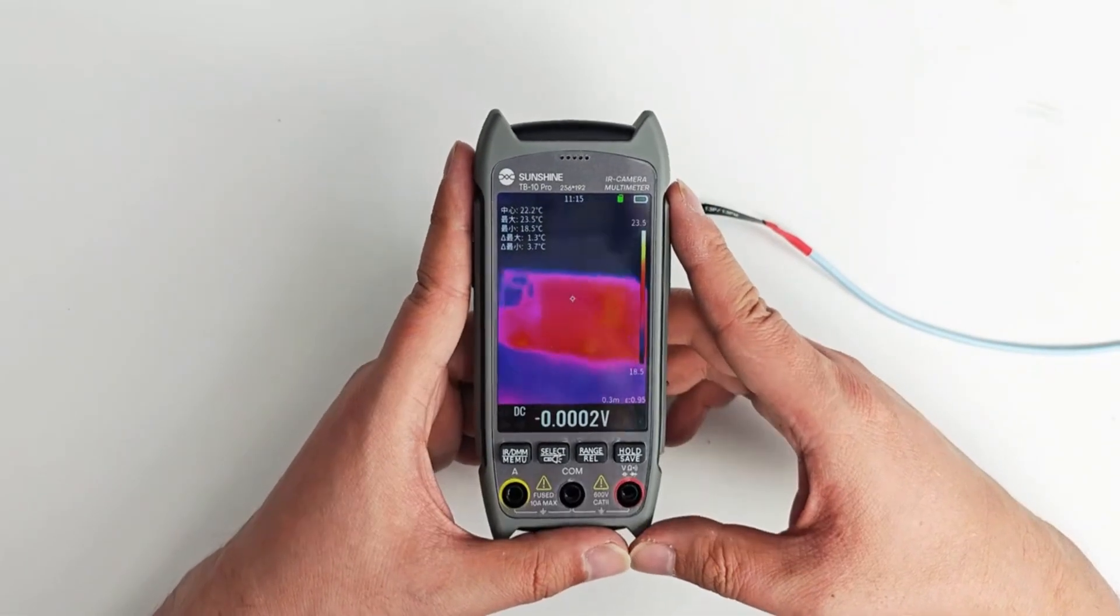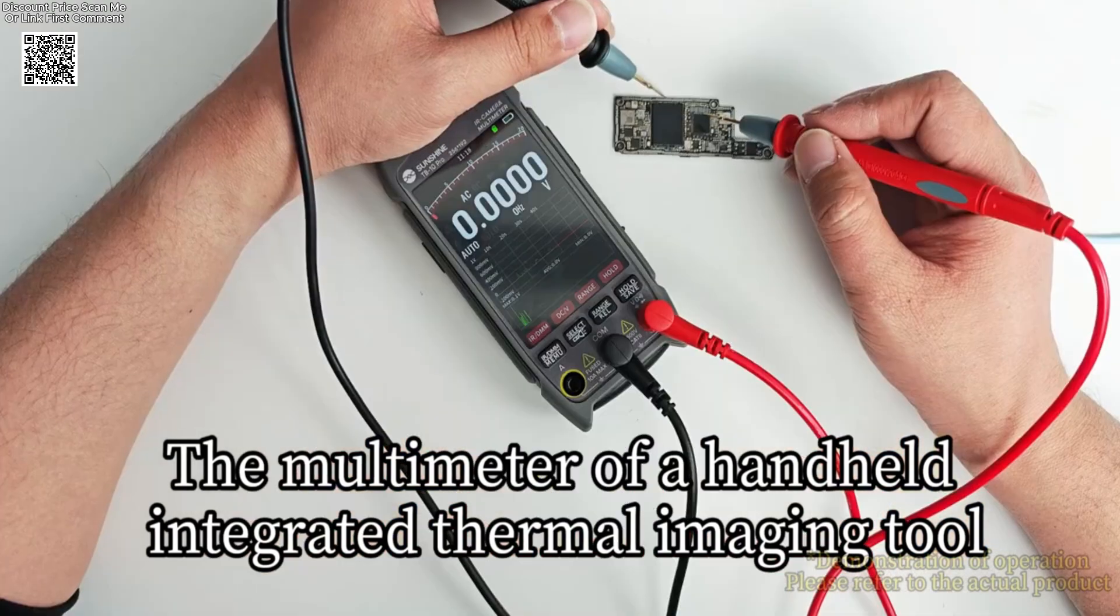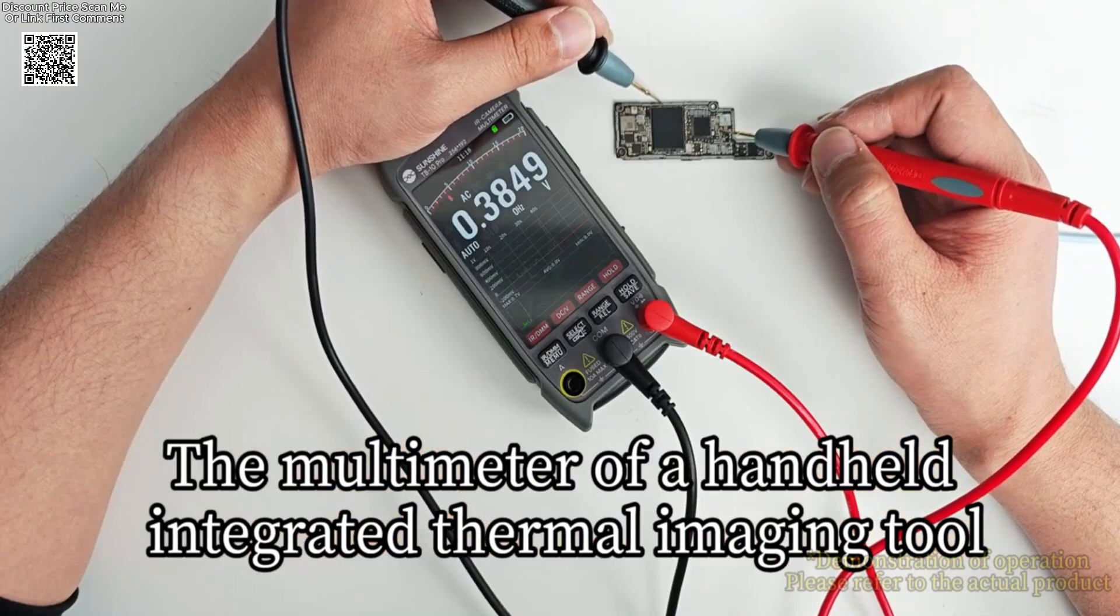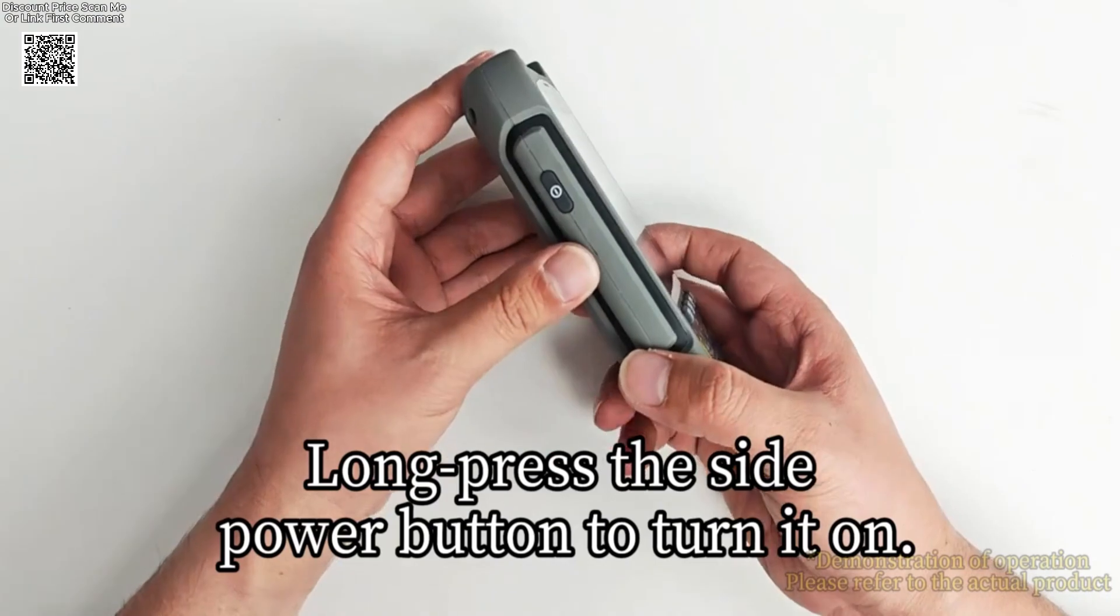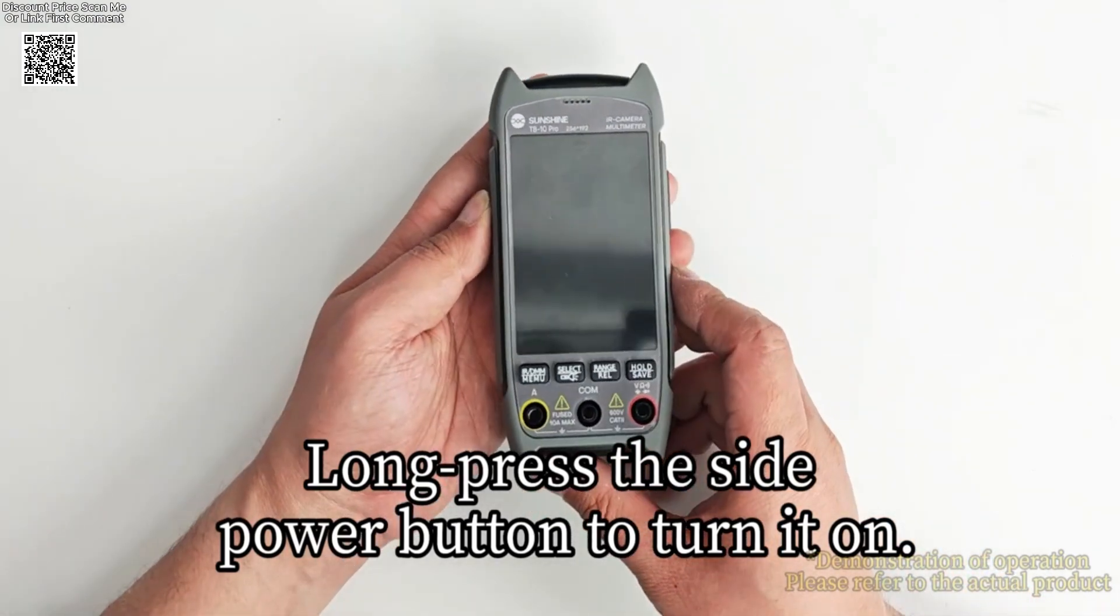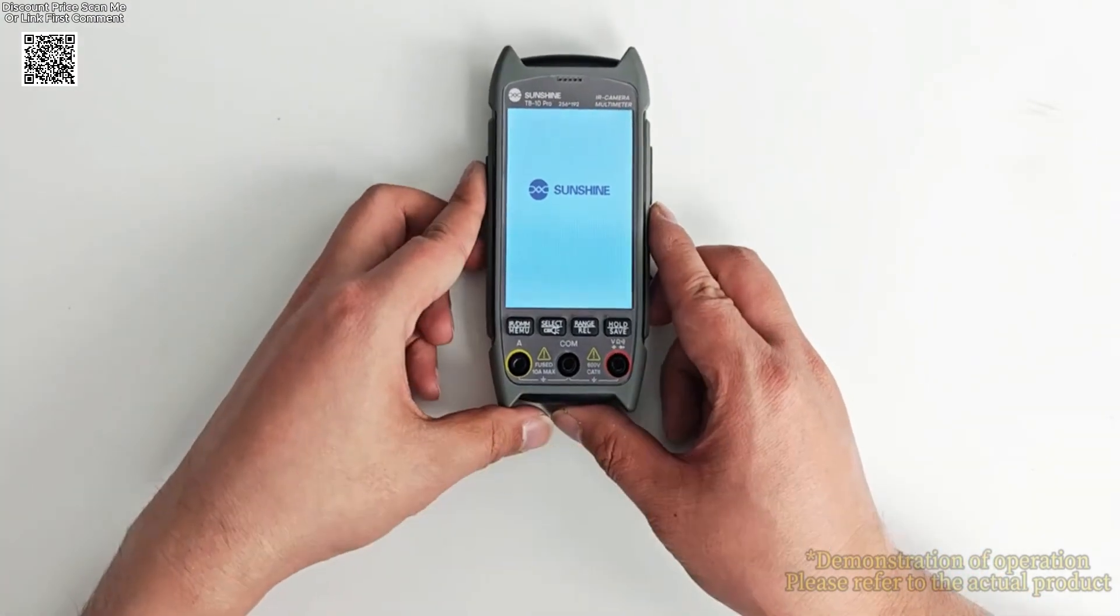The Sunshine TB10 Pro Infrared Thermal Imaging Multimeter is a versatile and advanced tool designed for professionals in mobile phone repair, PCB motherboard testing, and electronic research and development.